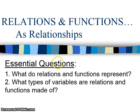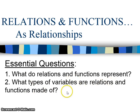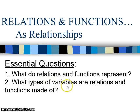Our essential questions for today are: 1. What do relations and functions represent? And 2. What types of variables are relations and functions made of? Before today, you have only known of variables as one type — a representation of an unknown value. Today you are going to learn about two different types of variables and how they represent relationships of relations and functions.